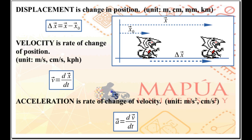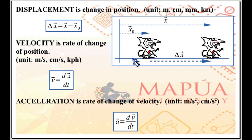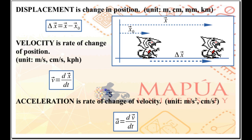Note that these quantities — position, displacement, velocity, and acceleration — are all vector quantities. Not only do they have magnitudes, they also have directions. So when doing analysis involving these quantities, bear in mind that they are vector quantities and you have to take into account their directions.